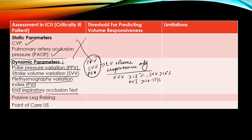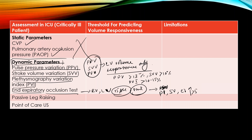If you want to find out about both right and left ventricular volume responsiveness, there is another test called the expiratory occlusion test. During this test, the patient is ventilated and you perform an expiratory hold for 15 seconds. This increases preload to both the right and left ventricles. If both ventricles are volume responsive, pulse pressure, stroke volume, and cardiac index will increase by more than 5%, indicating volume responsiveness.